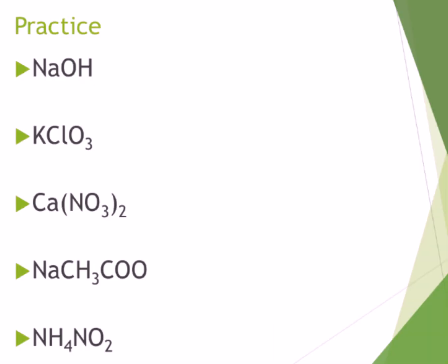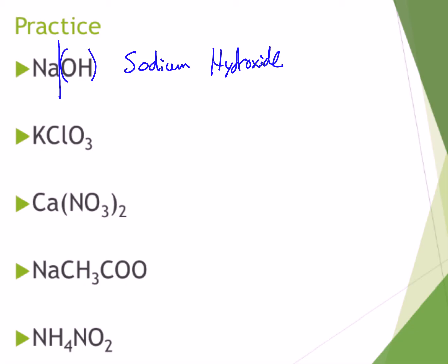Let's practice. Split the compound by drawing a line when you reach a second capital letter — to the left is the cation, to the right is the anion. Put parentheses around the anion if it has more than one element. Na is sodium; OH is hydroxide — so the compound is sodium hydroxide. Next: K is potassium; ClO3 is a polyatomic with more than one element — it's chlorate. So that compound is potassium chlorate.